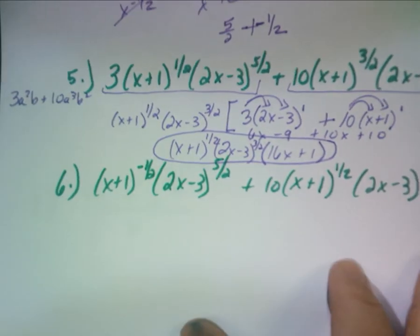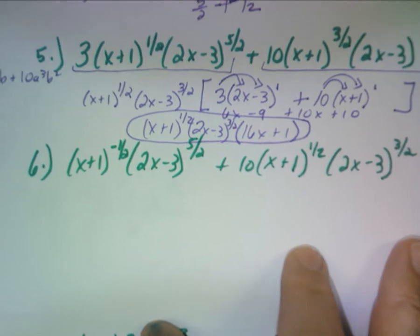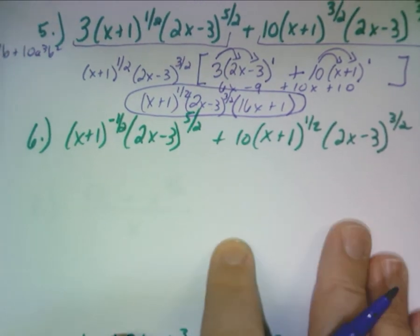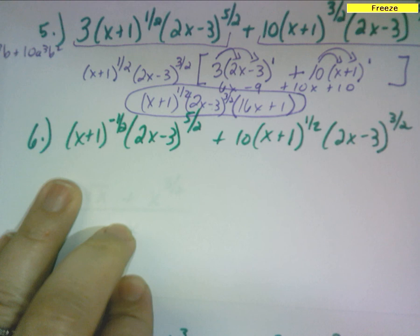I want you to try this bottom one right here. It's x plus 1 to the negative one half times 2x minus 3 to the positive five halves plus 10 times x plus 1 to the one half times 2x minus 3 to the three halves. Try it and see if it works out for you. If it does, you're good. We only got three more left and we're done with this lesson.